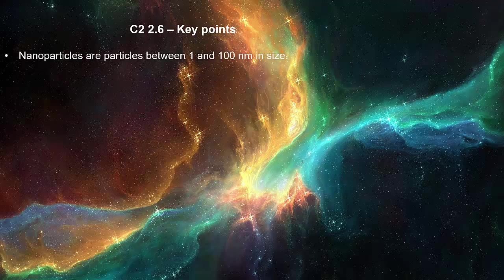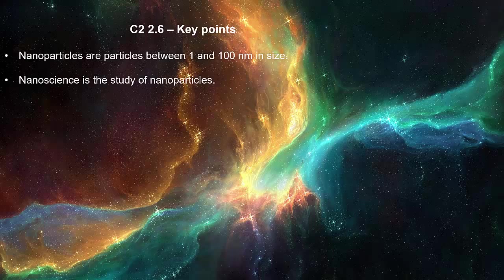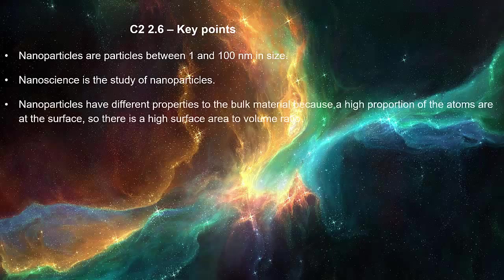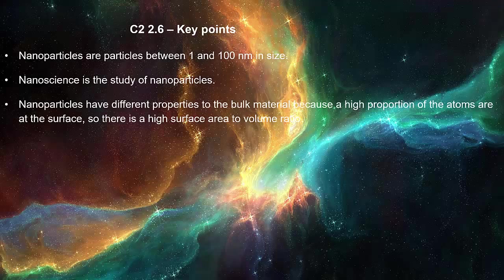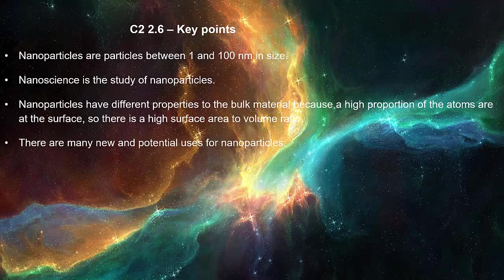Nanoparticles are particles between 1 and 100 nanometers in size. Nanoscience is the study of nanoparticles. Nanoparticles have different properties to the bulk material because a high proportion of the atoms are at the surface, so there is a high surface area to volume ratio. There are many new and potential uses for nanoparticles.